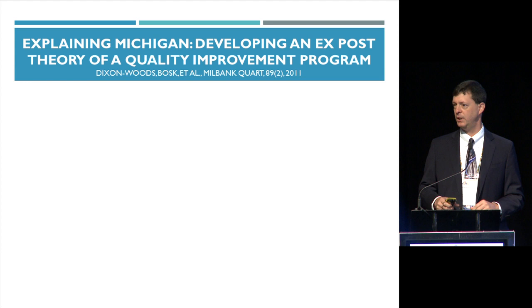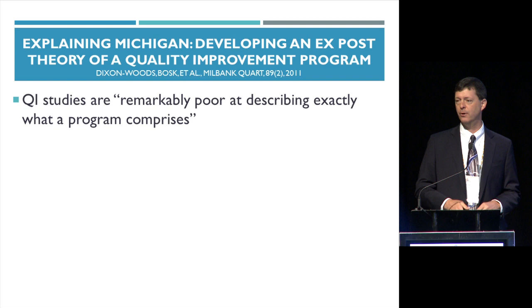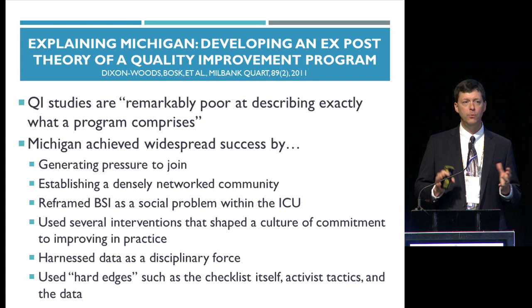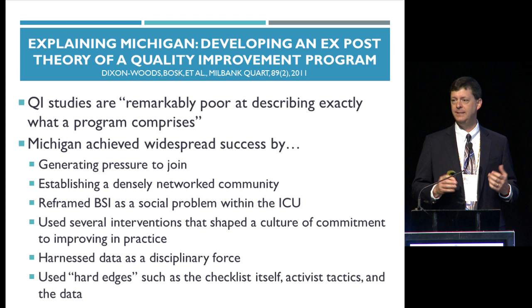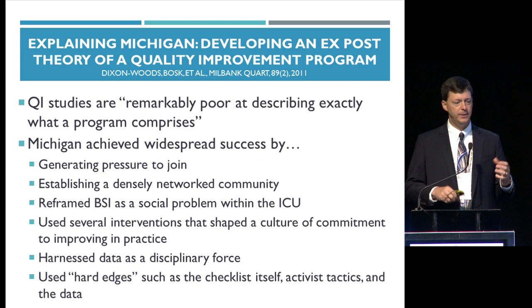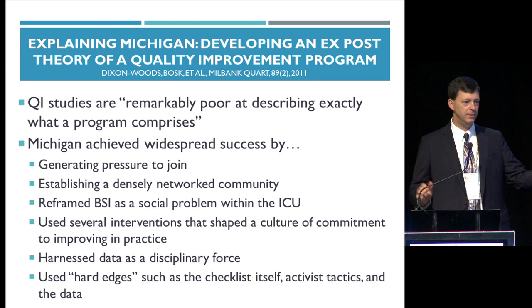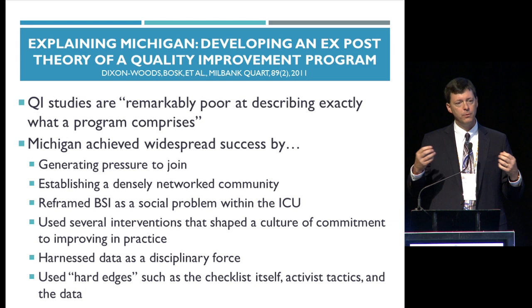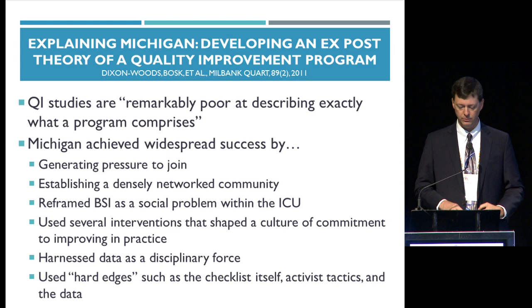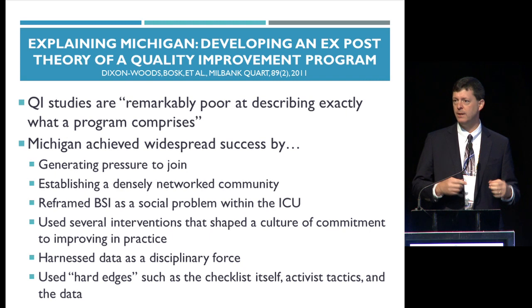Three years later, in 2011, Dixon-Woods, Bosk, and Pronovost were still trying to explain Michigan in a 30-to-35 page article in Milbank. They say QI studies are remarkably poor at describing exactly what a program comprises. They used words like: 'generated pressure to join a densely networked community,' 'a social problem,' 'interventions that shaped a culture of commitment,' 'hard data as a disciplinary force,' and 'use hard edges' — the checklist itself. Reading this, it was not someone walking into an ICU, handing a checklist, and walking away saying it must work. There was so much important difficult hard work at each of those ICUs.